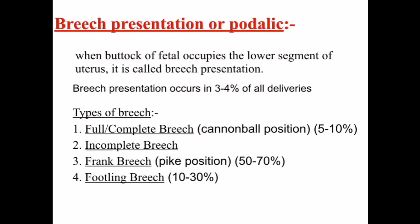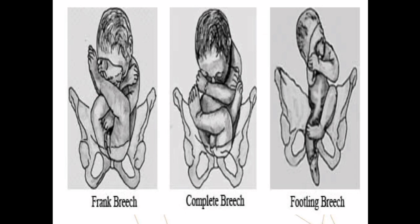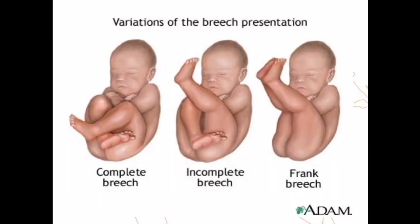There are types of breech: full or complete breech, otherwise known as the cannonball position, occurs in five to ten percent. Incomplete or frank breech, otherwise known as the bike position, occurs in fifty to seventy percent. Footling breech occurs in ten to thirty percent of cases. Here is an image showing the variations of breech presentations — complete, incomplete, and frank breech.